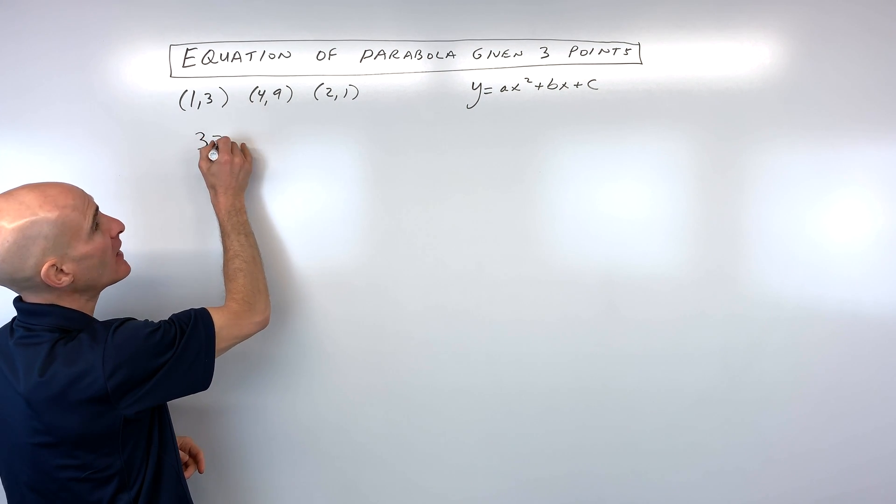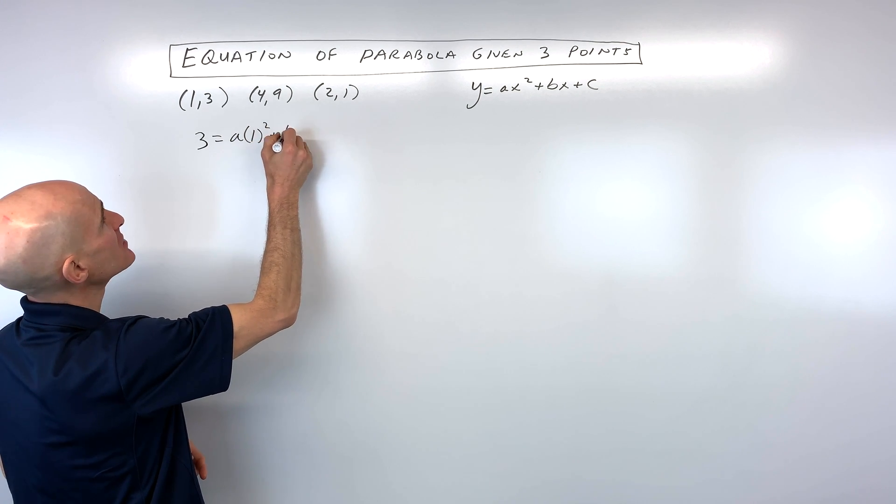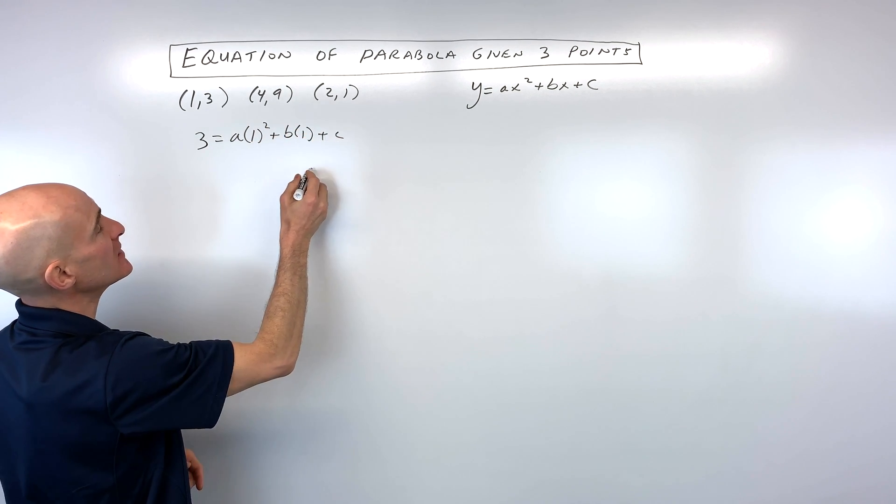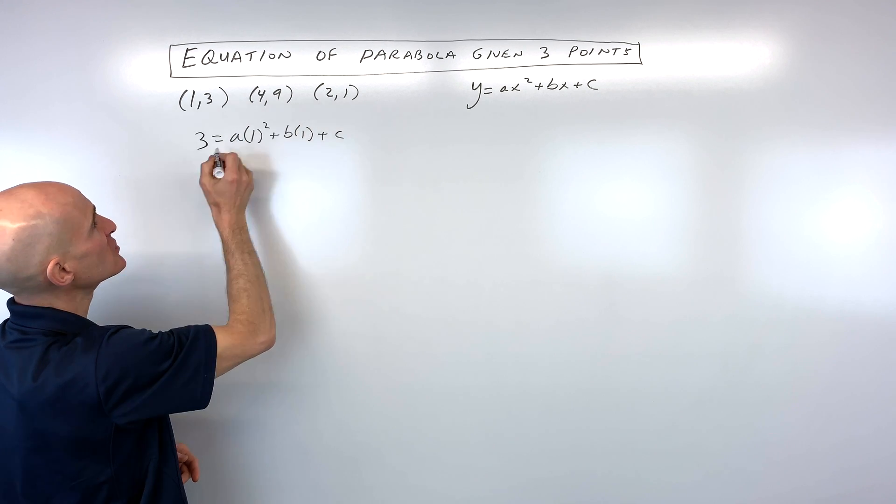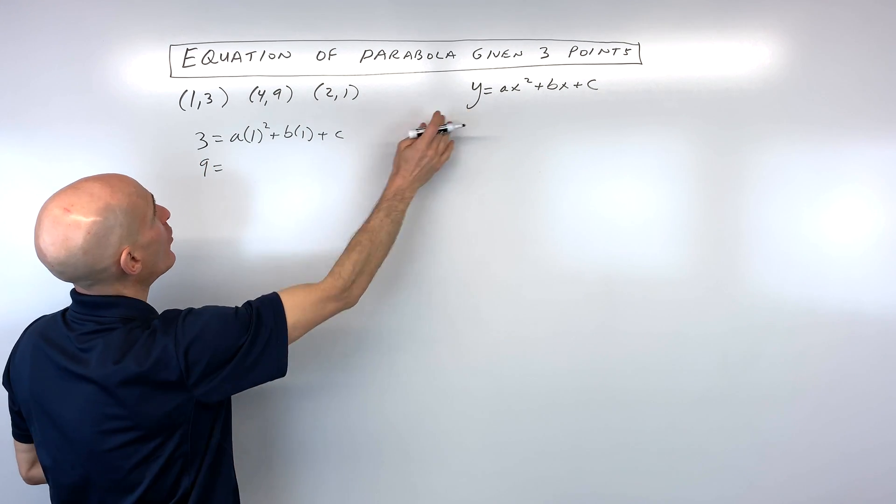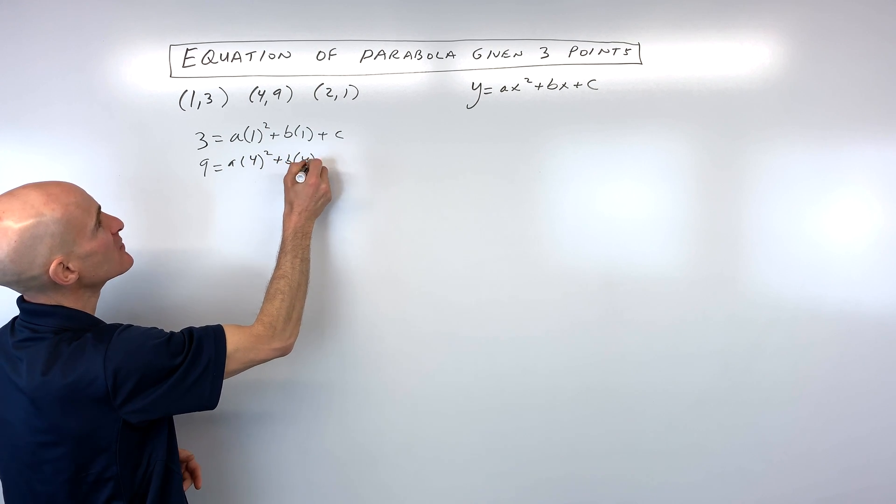We've got 3 is the y, equals a times 1 squared plus b times 1 plus c. That's our first equation. Now if we go to the next point, you can see 9 is y, so I'm putting that in for y, equals a times 4 squared plus b times 4 plus c.